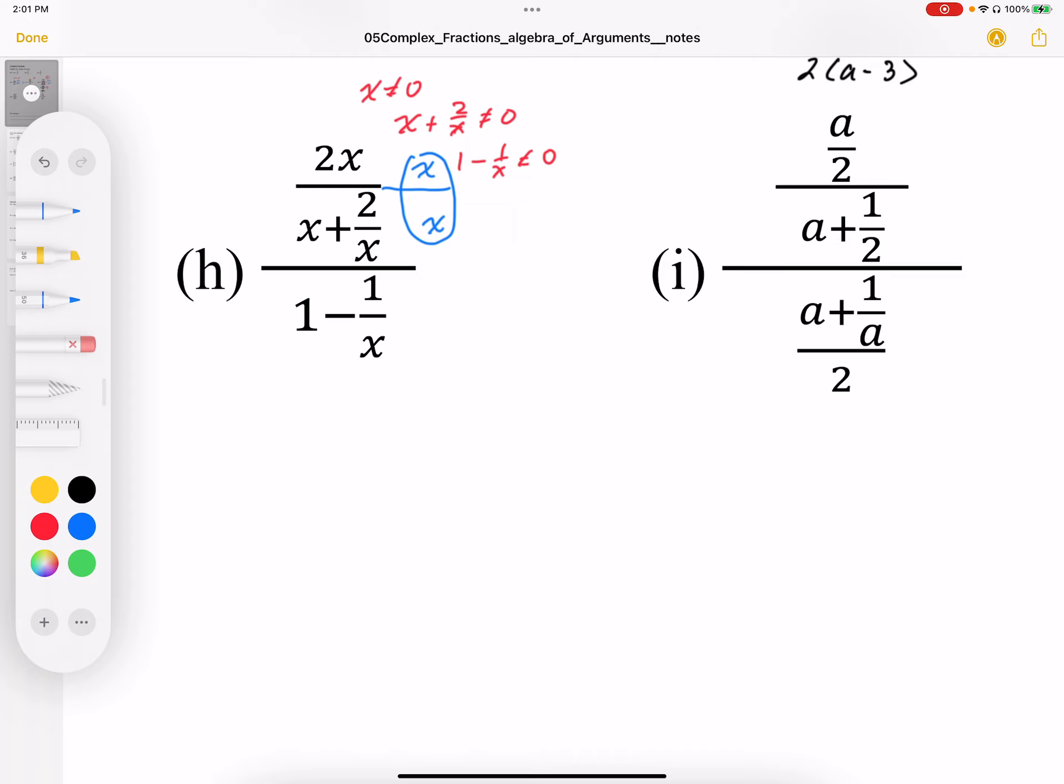But once I do that, I'm going to end up with, in the numerator, 2x squared over, when I multiply this through, I get x squared plus 2. And then the rest of the fraction, it didn't touch. So I'm going to write this in black here. And I end up with 1 minus 1 over x.